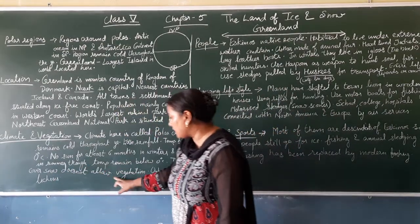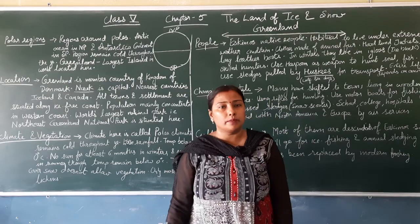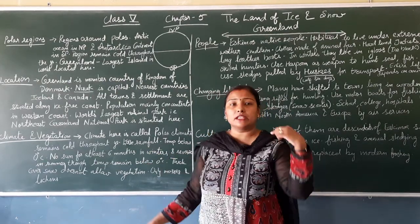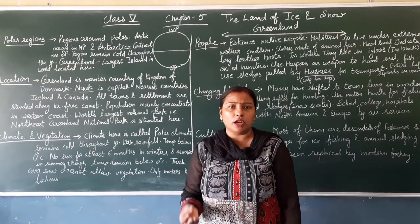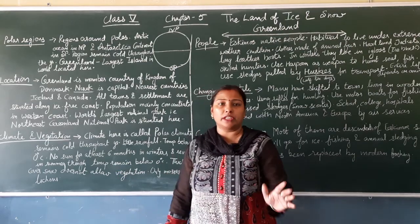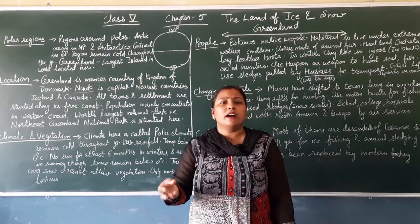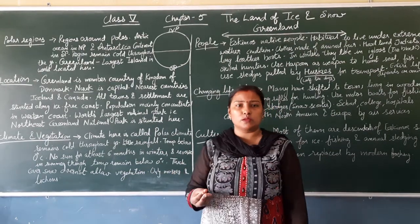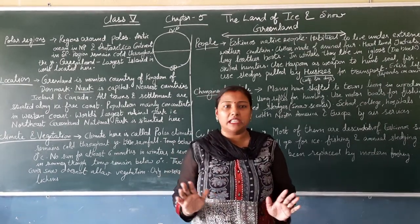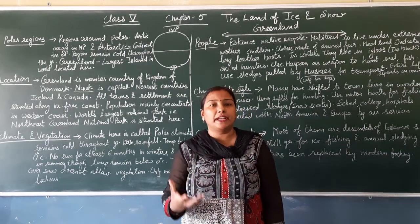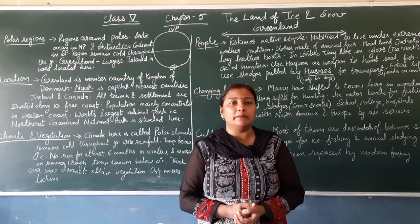Thick snow cover does not allow vegetation to grow. There are no big forests or trees. Only for about 2–3 months when the sun shines a little, there is a small amount of growth. There is very little rain. Only small plants like mosses or lichens are found. Other than that, there is no significant vegetation and we don't get to see trees.